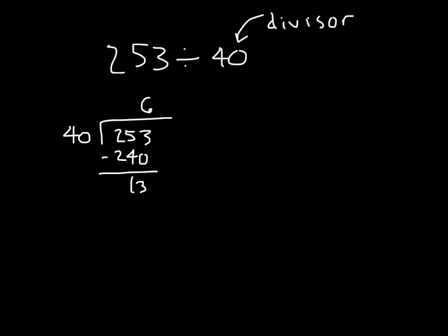We subtract that, we get 13. We know that 13 there can't make another group of 40. In other words, we have chosen correctly. So our remainder is 13. Now to be absolutely positive that we chose correctly, we run the check.